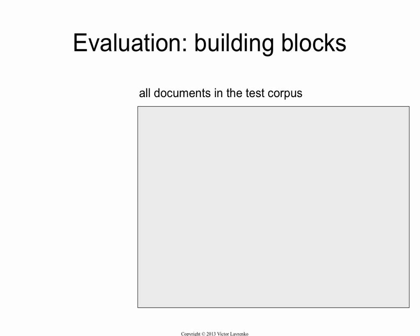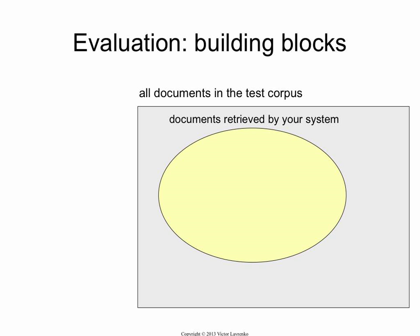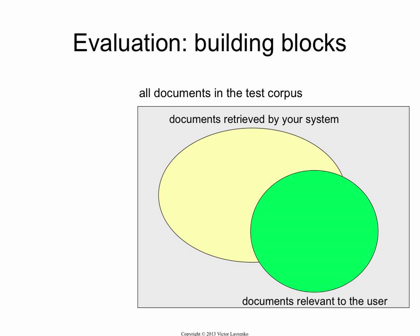Hopefully this will be a review for many of you, so I won't spend too much time writing. So this is our corpus — all documents that you have. These are the documents that your system has retrieved in response to the user's query. And these are the documents that are actually relevant to the user. So this is your relevant set, R.